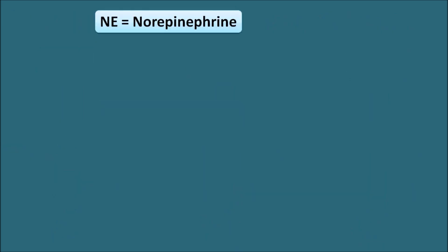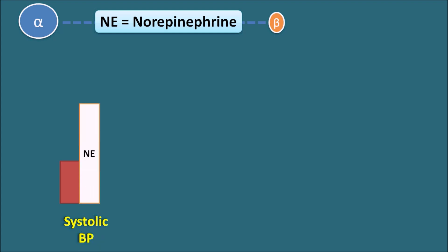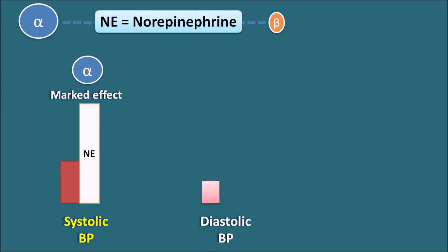Norepinephrine has greater selectivity toward alpha receptors and little selectivity toward beta receptors. Considering its effect on systolic blood pressure — suppose the normal systolic blood pressure is 120 mmHg — when norepinephrine infusion is given, systolic blood pressure is markedly increased due to its alpha action. For diastolic blood pressure, because of its little beta effect and predominant alpha effect, norepinephrine slightly increases diastolic blood pressure, again due to alpha action.